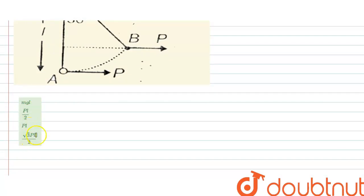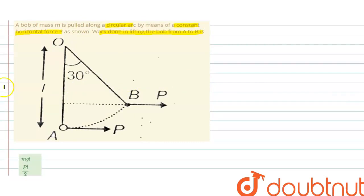MGL, PL/2, PL root 3, PL/2. So as you can see in this diagram, a constant force is applied, whose magnitude is P, and its direction and magnitude always remain same, P in horizontal direction.